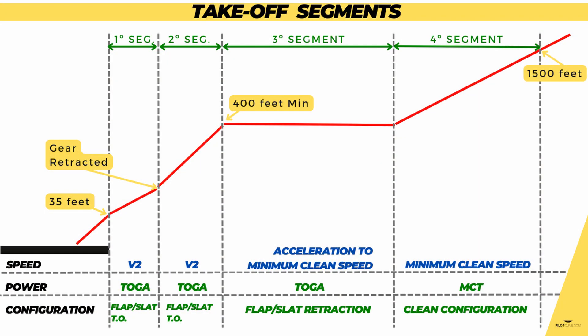The third take-off segment starts from a minimum height of 400 feet, all the way to flaps retracted and maximum continuous thrust set. Since you are leveled off in order to retract the flaps, accelerate the aircraft, and set maximum continuous thrust, your power setting transitions from take-off power to maximum continuous thrust. In this segment you can fly level, so there is no minimum climb gradient required. The fourth segment, which starts from the moment you have flaps up and maximum continuous thrust set up to 1500 feet, requires a climb gradient of 1.2% for a twin-engine aircraft.